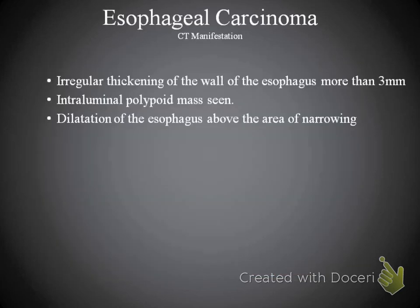What we're looking for is irregular thickening of the wall of the esophagus more than 3 millimeters. Also, an intraluminal polypoid mass potentially seen, and then dilatation of the esophagus above the area of narrowing.